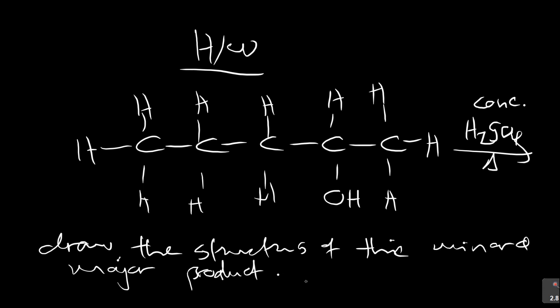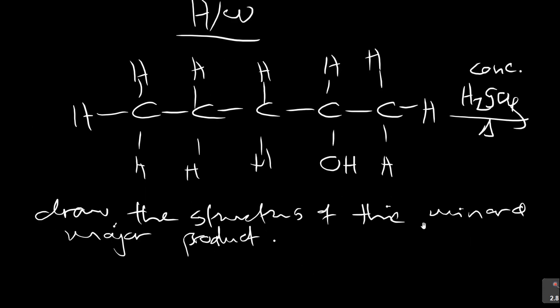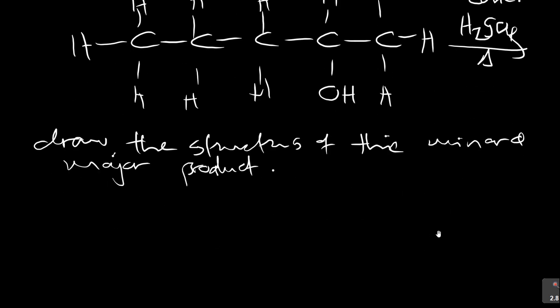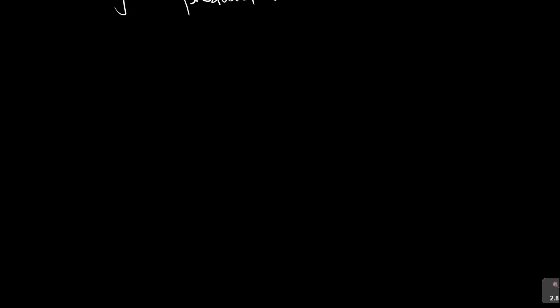That's the first homework question. The second homework question involves a haloalkane structure with a chloro group, reacted with sodium hydroxide in the presence of heat and ethanol. Write the balanced structural equations of the major and minor products.